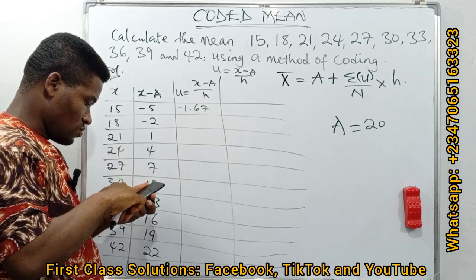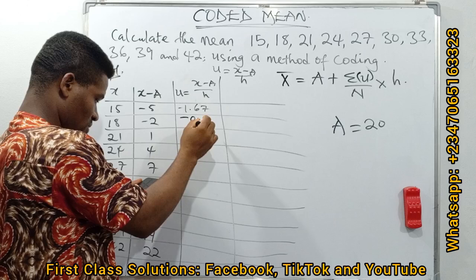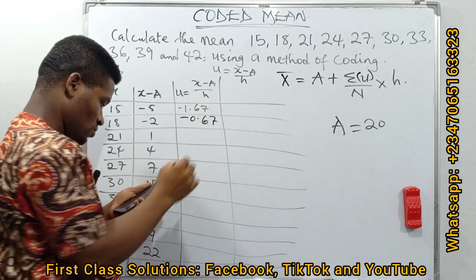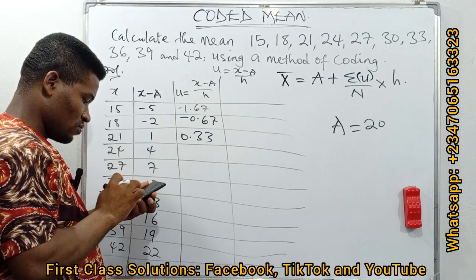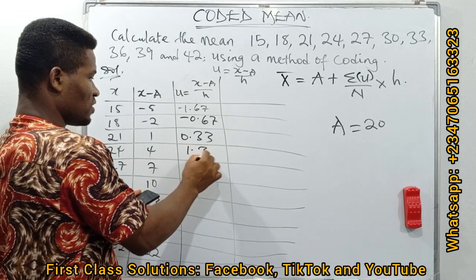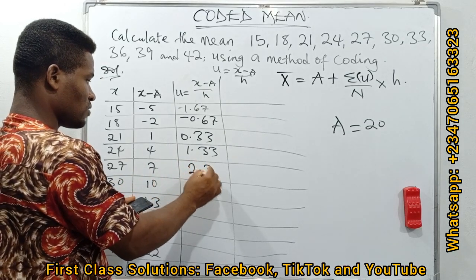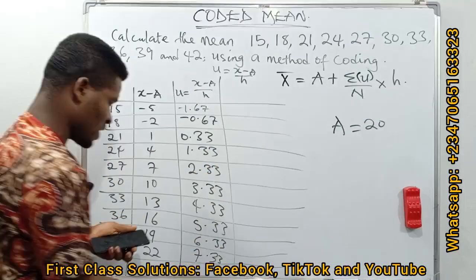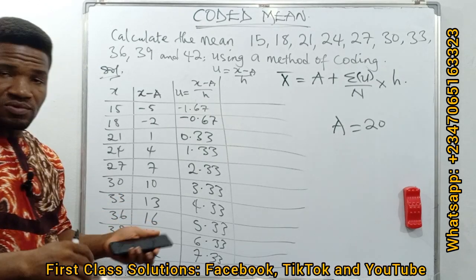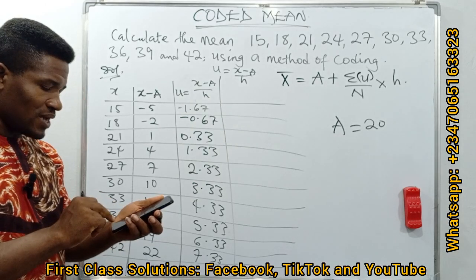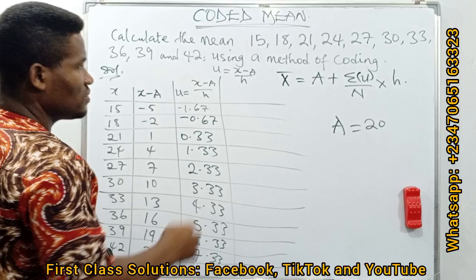Minus 2 over 3 will give us minus 0.67. 1 over 3, we have 0.33. 4 over 3, we have 1.33. 7 over 3, we have 2.33. You can confirm if you have your calculator with you. So we have this as our coding factor.